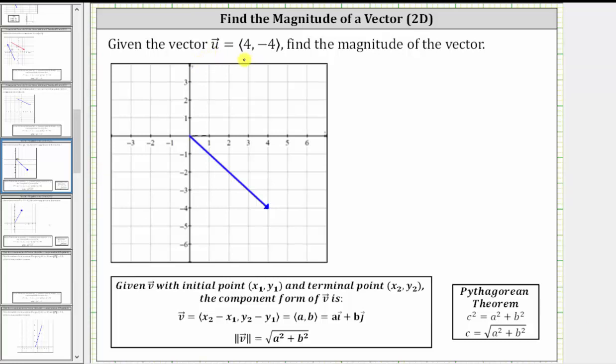Given the vector u with an x component of four and a y component of negative four, find the magnitude of the vector.